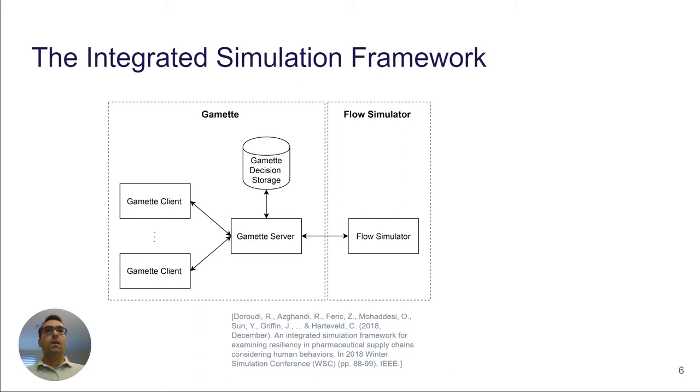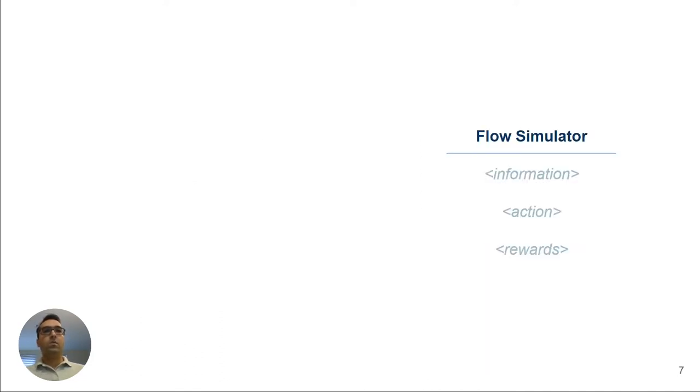The flow simulator is a multi-agent simulation environment designed based on partially observable Markov decision processes, or POMDPs. According to the POMDP framework, the agent has access to some observation that gives incomplete information about the state of the system. Then the agent can take some actions and receive some rewards. The design of the gamettes follows the same idea of the POMDP framework by allowing players to collect information, take actions and receive rewards.